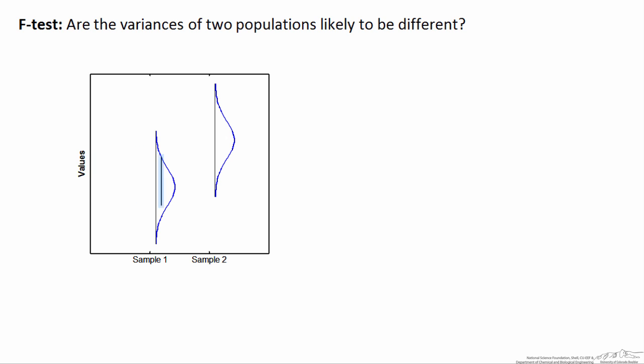In this situation, I know that the variances are the same because I made the distribution, but we could also measure it. Here's the width of this distribution, and that's equivalent to the width of this distribution. So their variances are the same, although their means are not the same — the mean for sample 2 is larger than the mean for sample 1.